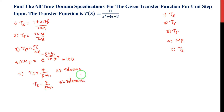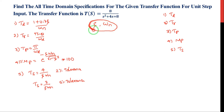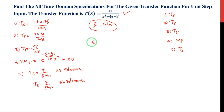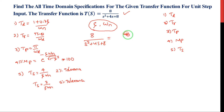Before finding the time domain specifications, we have to calculate the damping ratio zeta and omega-n. To do that, we compare the given transfer function with the basic standard transfer function, which is omega-n squared divided by s-squared plus 2 zeta omega-n times s plus omega-n squared.